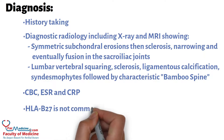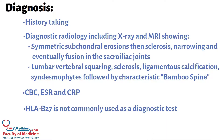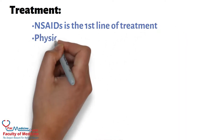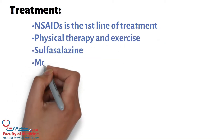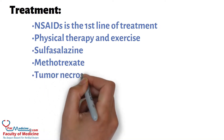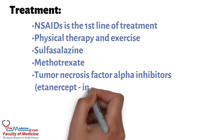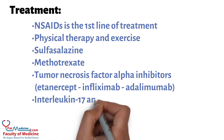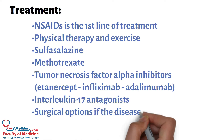HLA-B27 is not commonly used as a diagnostic test. Treatment: NSAIDs are the first line of treatment, followed by physical therapy and exercise, sulfasalazine, and methotrexate. Biologic options include tumor necrosis factor alpha inhibitors such as etanercept, infliximab, and adalimumab, as well as interleukin-17 antagonists. Surgical options are available if the disease is progressive.